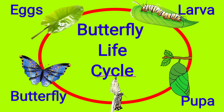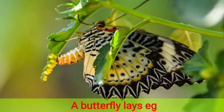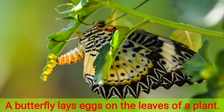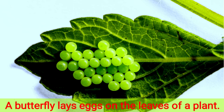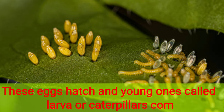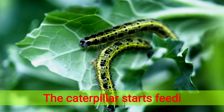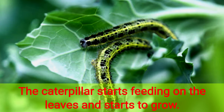Our topic for today is the life cycle of a butterfly. A butterfly lays eggs on the leaves of a plant. These eggs hatch and babies called larvae or caterpillars come out of the eggs. The caterpillar starts feeding on the leaves.